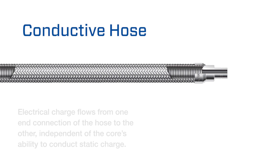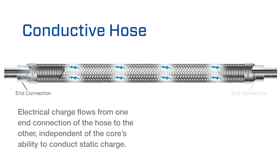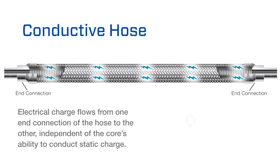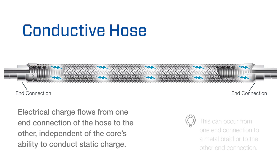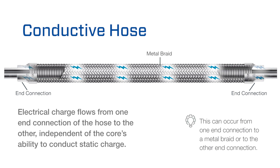A conductive hose allows for electrical charge to flow from one end connection of the hose to the other, independent of the core's ability to conduct static charge. This can occur from one end connection to a metal braid or to the other end connection.